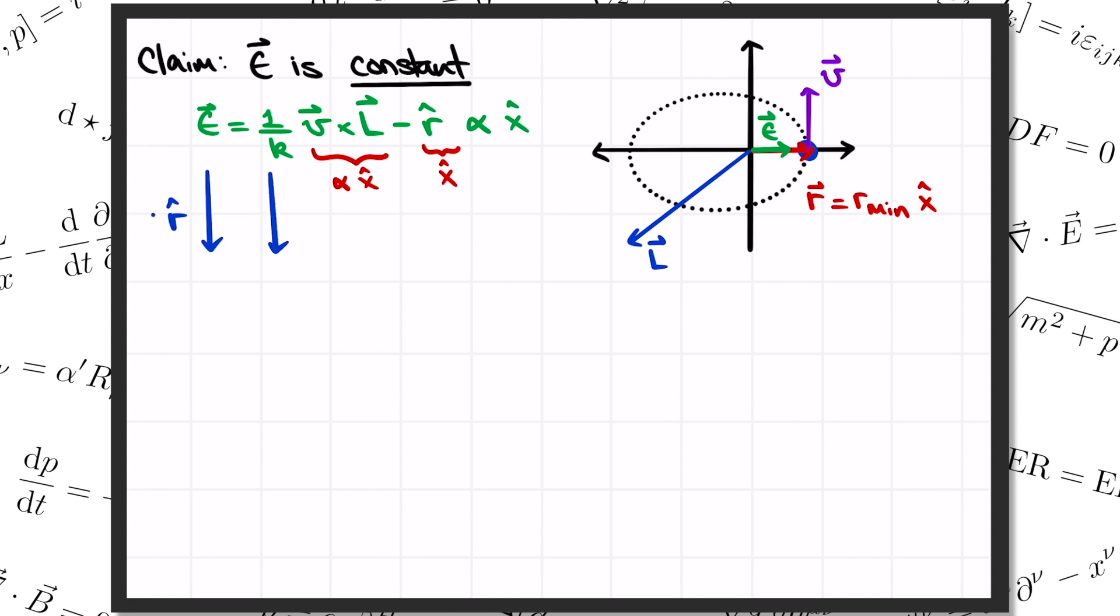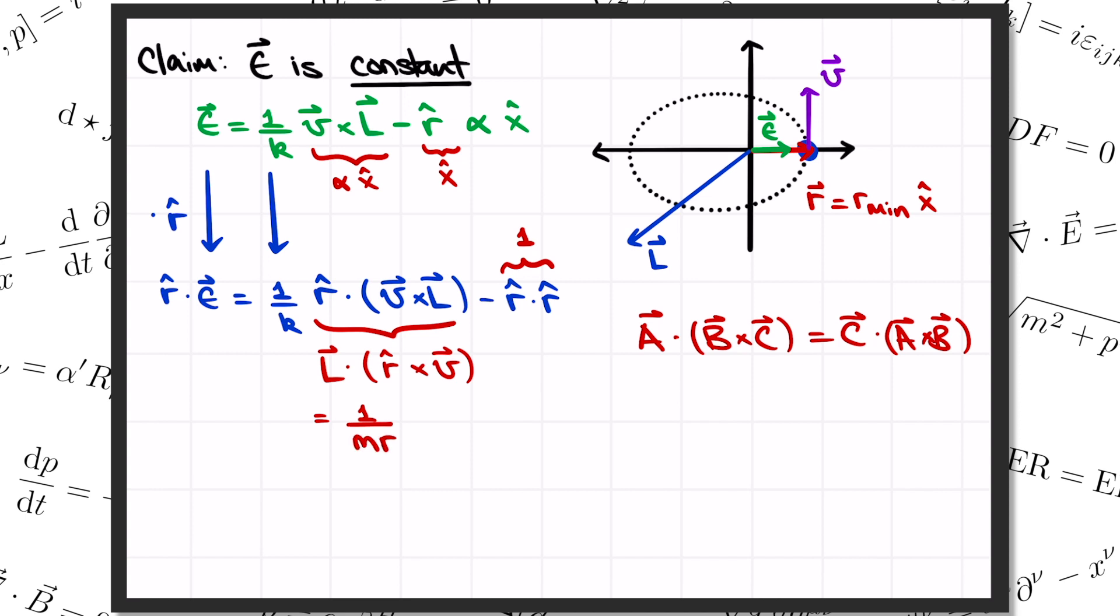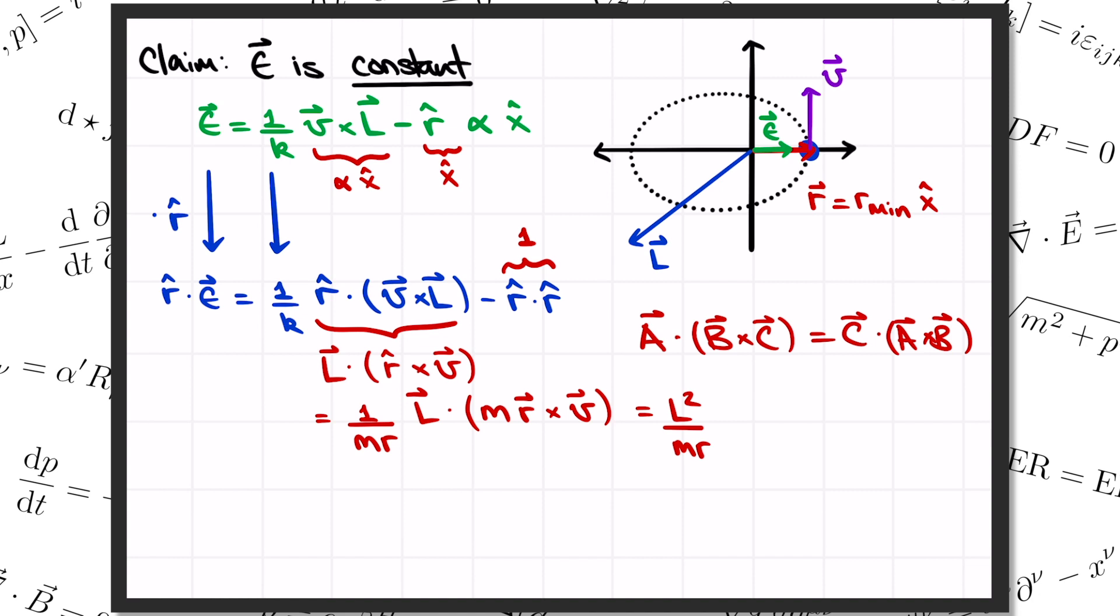The trick is to take the dot product of epsilon with r. We get r hat dot epsilon equals 1 over k times r hat dot v cross l minus r hat dot r hat. Whenever you take the dot product of a vector with itself, you get the length of the vector squared. But r hat is a unit vector, so this second term here is just 1. Now to simplify the first term, we're going to apply a vector identity. The identity says that a dot b cross c is the same as taking c dot a cross b. That's going to allow us to write this first term as l dot r hat cross v. But now if I multiply and divide by m times r, I can write that factor in parentheses as m times r vector cross v, which is just the angular momentum. So this term here we can simplify as l squared over m times r. So that's the right hand side, but now what about the left hand side?